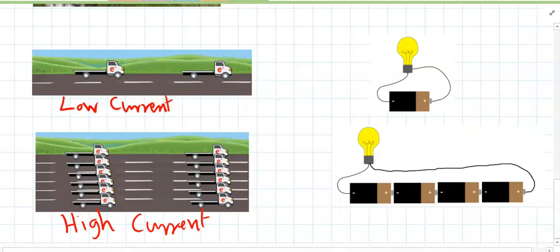Here's another way to think of it too, and I really like this analogy. If you imagine that a truck on the road is an electron, so the electrons are flowing through the circuit. If you have a circuit with a low current, like this one here,